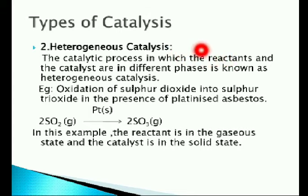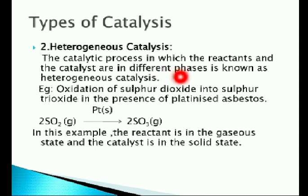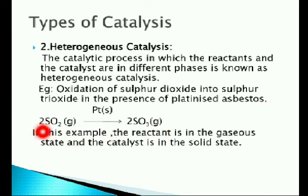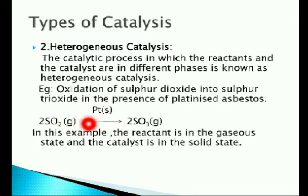The second type is heterogeneous catalysis. The catalytic process in which the reactants and the catalyst are in different phases is known as heterogeneous catalysis. Example: oxidation of sulfur dioxide into sulfur trioxide in the presence of platinized asbestos. Sulfur dioxide in gaseous phase forms sulfur trioxide in gaseous phase in the presence of solid platinized asbestos as the catalyst. The reactant is in gaseous phase and platinum is in solid phase, so both phases are different. Hence, the catalysis is heterogeneous.